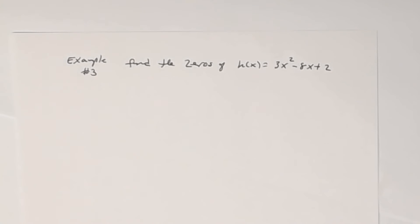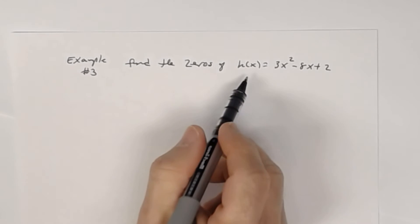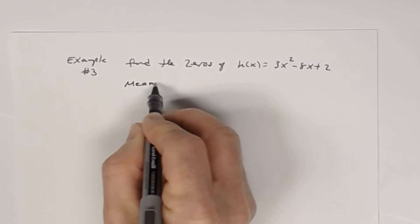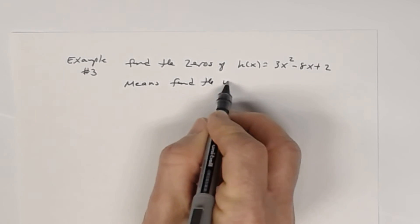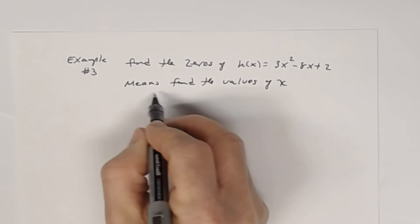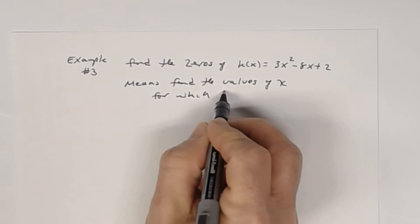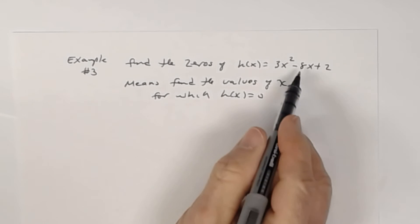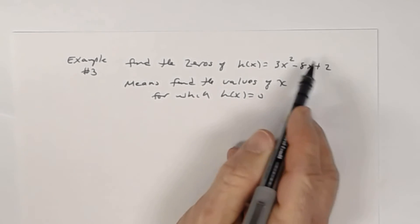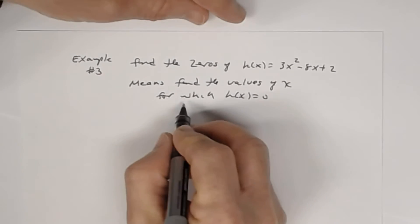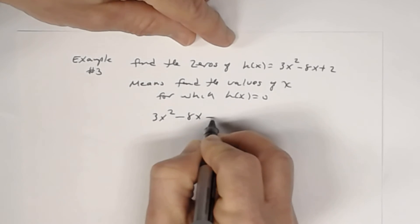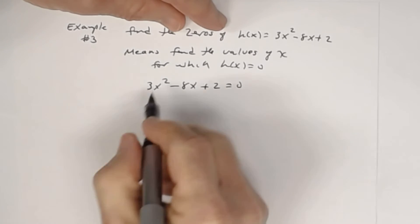Let's do one more example, which should help us for the next lesson. Find the zeros of h of x equal to 3x squared minus 7x plus 2. To find the zeros, remember, set the function equal to zero: 3x squared minus 7x plus 2 equals zero. And then we're going to factor.